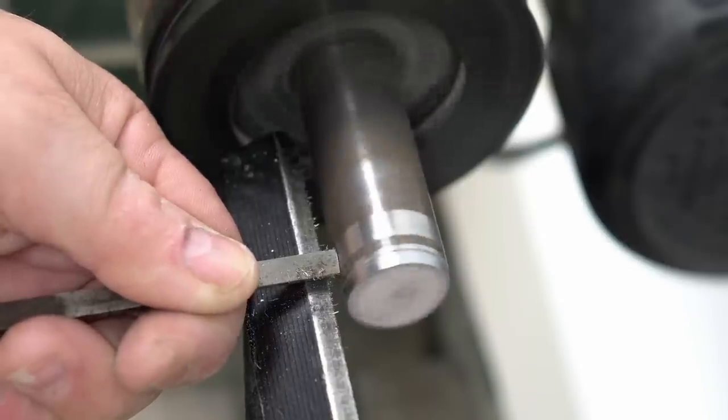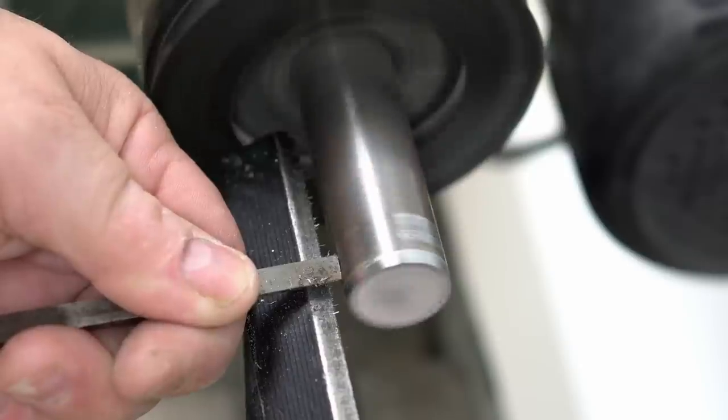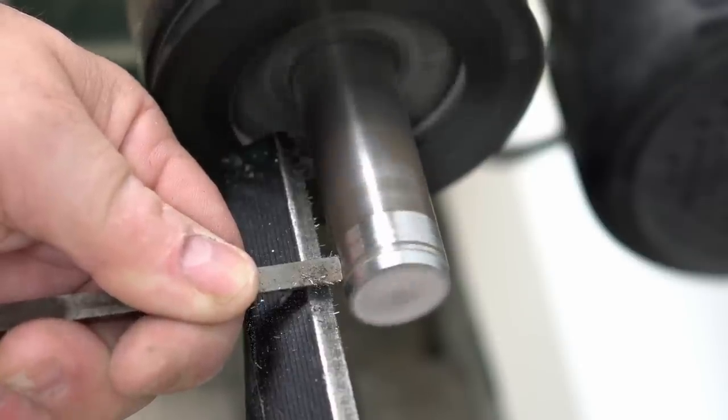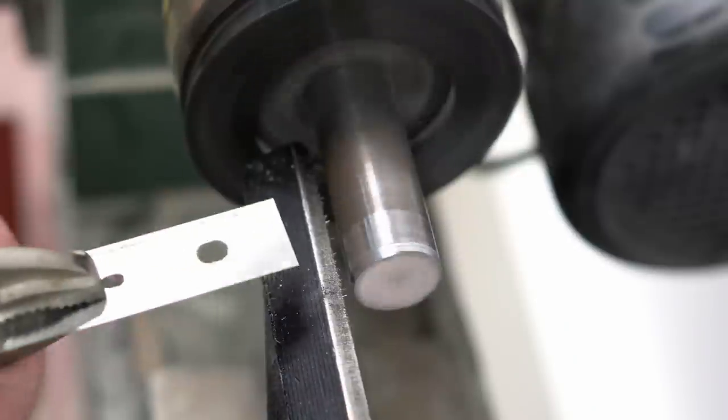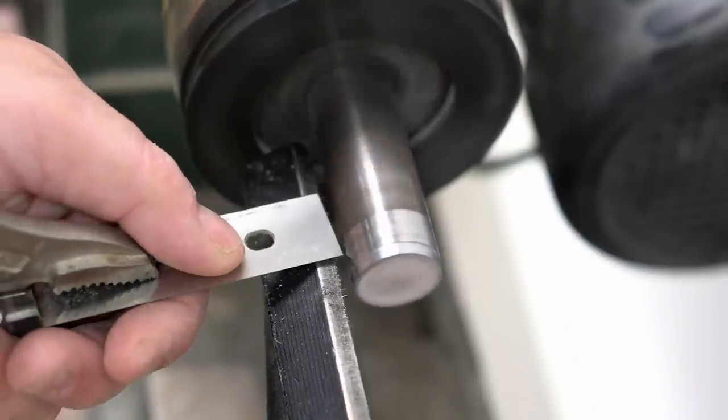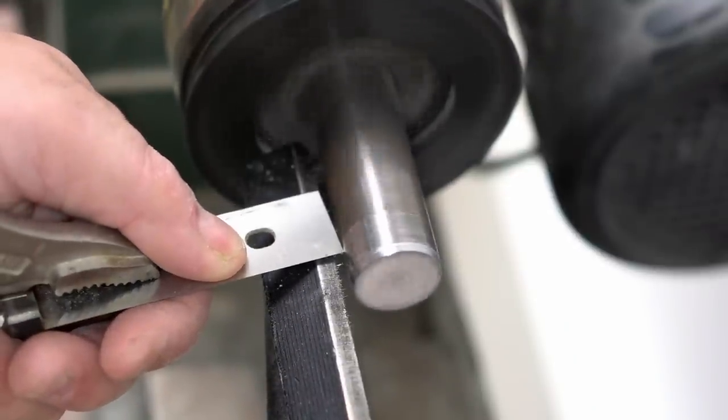So then I was thinking if I had something harder than a chisel and I immediately thought of using a carbide tooth from a saw blade, but then it occurred to me I have a piece of planer blade and the steel in that is a lot harder than the chisel.